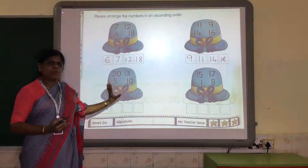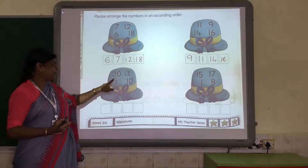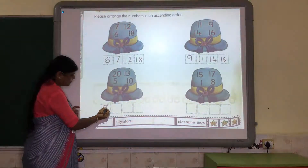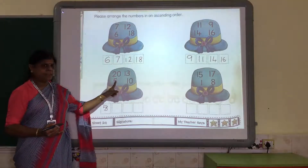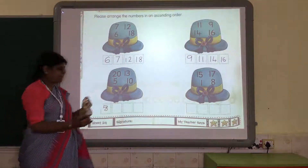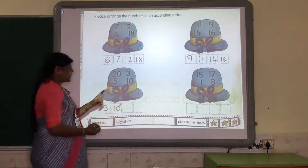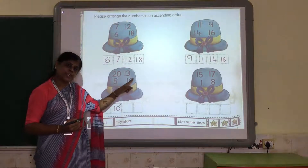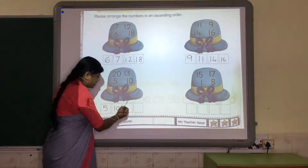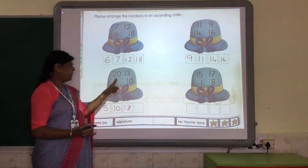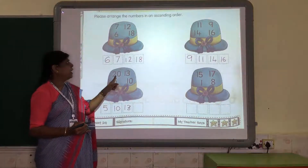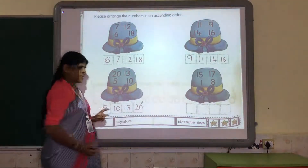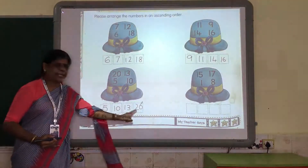Now this block you will do. Try to calculate: 5, 20, 13, 10. Which will be the smallest number? 5. After 5, 10. After 10, which number comes — 13 or 20? First comes 13, then the last number is 20. So we have arranged from the smallest number to the biggest number.